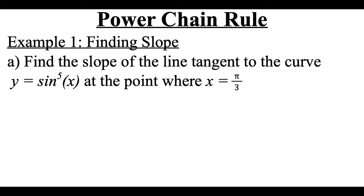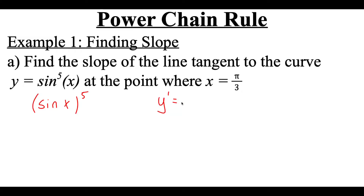In this example, we're going to use the power chain rule to help us find a slope. We're going to find the slope of the line tangent to the curve y equals sine to the fifth of x at the point x equals pi over 3. Now, sine to the fifth power of x actually means sine of x all being raised to the fifth power. When we do the derivative of that, here's where the power chain rule is going to come into play.